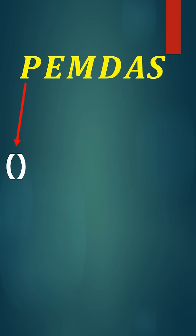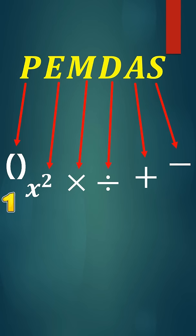P stands for parentheses, E stands for exponents, M and D stand for multiplication and division, A and S stand for addition and subtraction. According to PEMDAS, we always do parentheses first, then exponents, then multiplication and division from left to right, and finally addition and subtraction also from left to right.